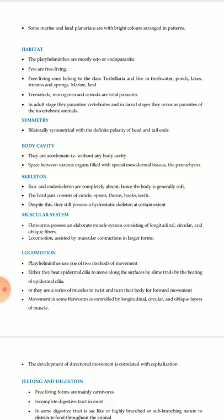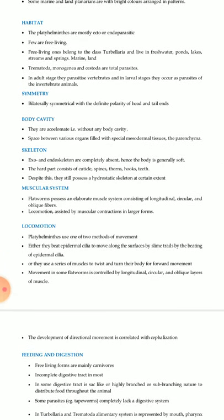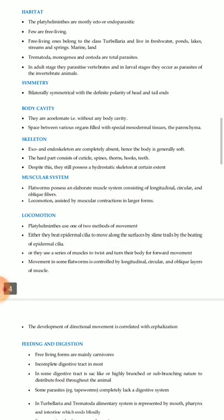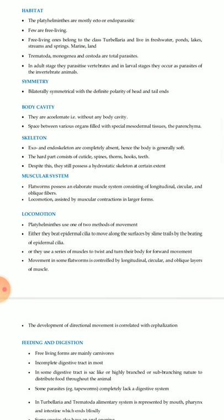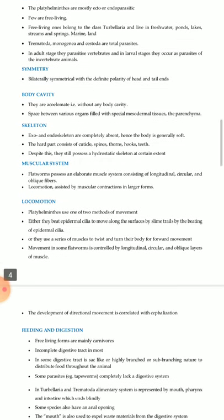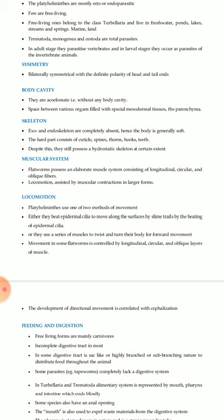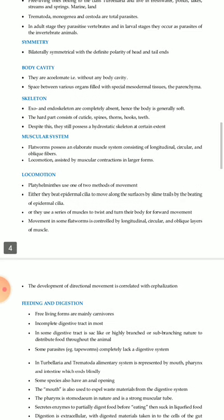Some marine and land planarians display bright colors arranged in patterns. Habitat: Platyhelminthes are mostly ectoparasitic or endoparasitic, with a few free-living. Free-living forms belong to Class Turbellaria and live in freshwater ponds, lakes, streams, and springs. Marine and land forms, as well as Trematoda, Monogenea, and Cestoda, are total parasites in the adult stage, parasitizing vertebrate animals; in larval stages they occur in invertebrate animals.